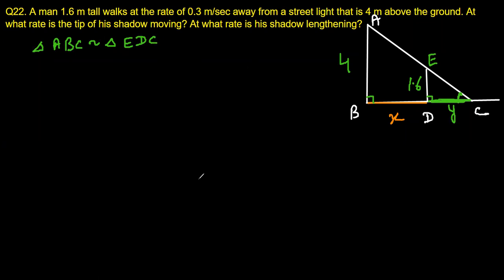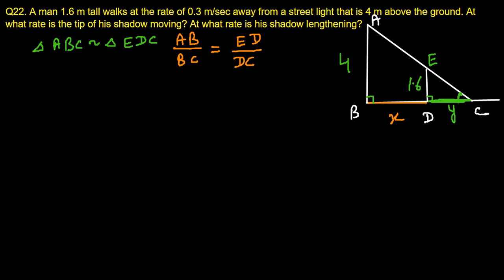Since the triangles are similar, we can write AB divided by BC equals ED divided by DC. The corresponding side ratios give us: AB is 4, BC is x plus y, ED is 1.6, and DC is y. So we have 4 divided by (x + y) equals 1.6 divided by y.